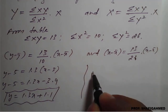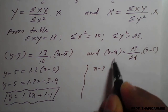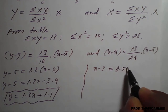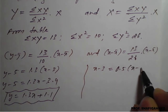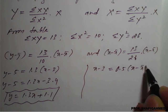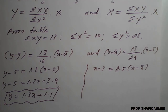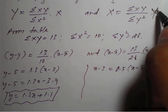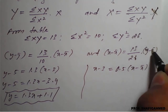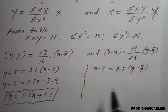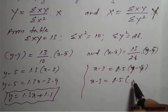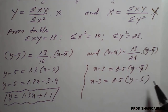Similarly, here also, X minus 3 — X̄ value is 3 — is equal to 13 by 26, which gives 0.5 into Y minus Ȳ. This is Y here. So therefore it is Y minus Ȳ. So X minus 3 is equal to 0.5 into Y minus Ȳ, where Ȳ value is 5.